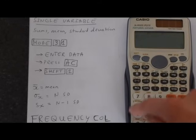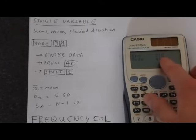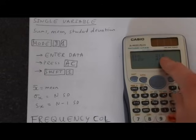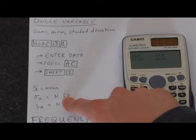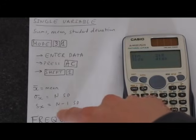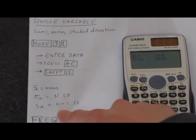We've also got things like the mean, which is this X bar. We've got sigma X, which is a standard deviation based on N. And SX, which is a standard deviation based on N minus 1.